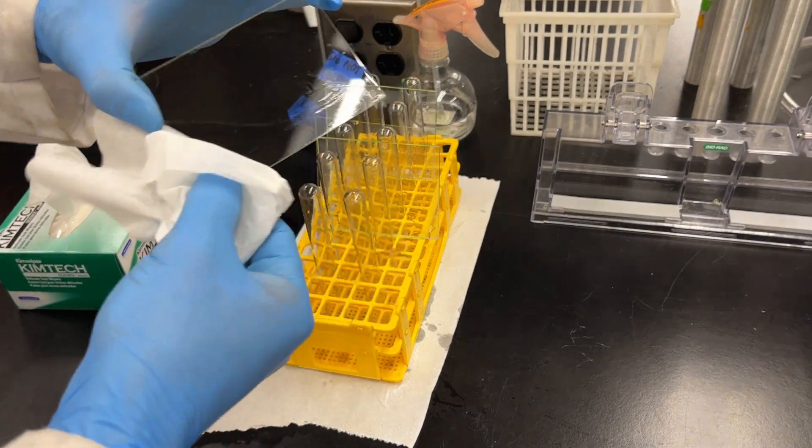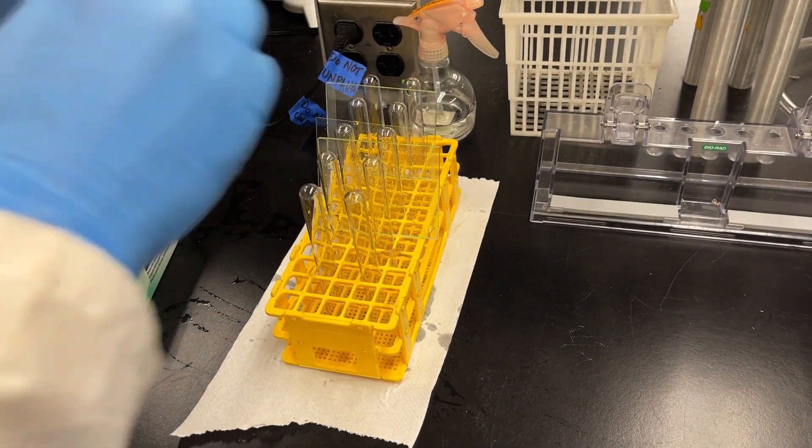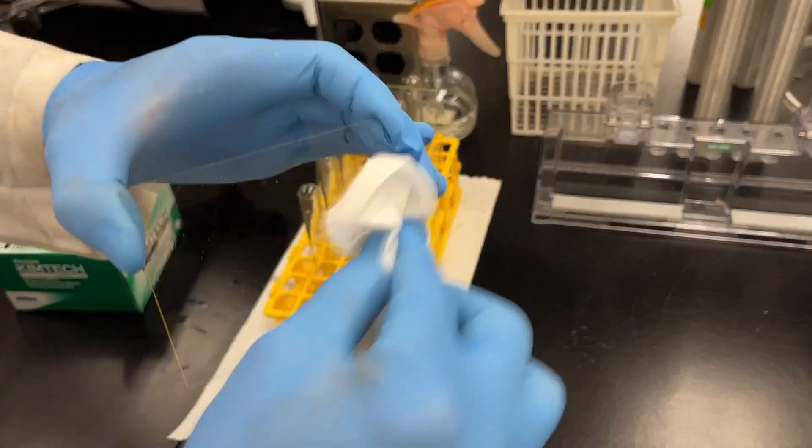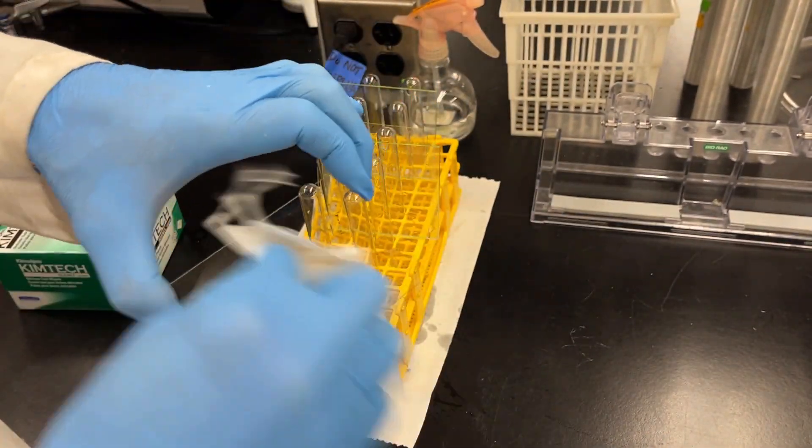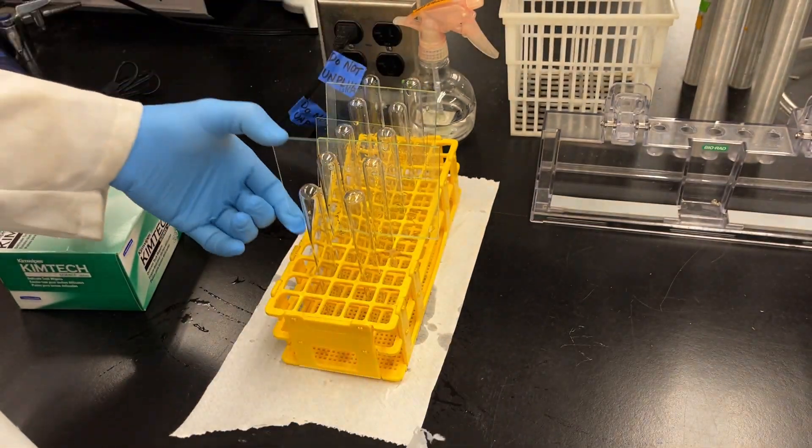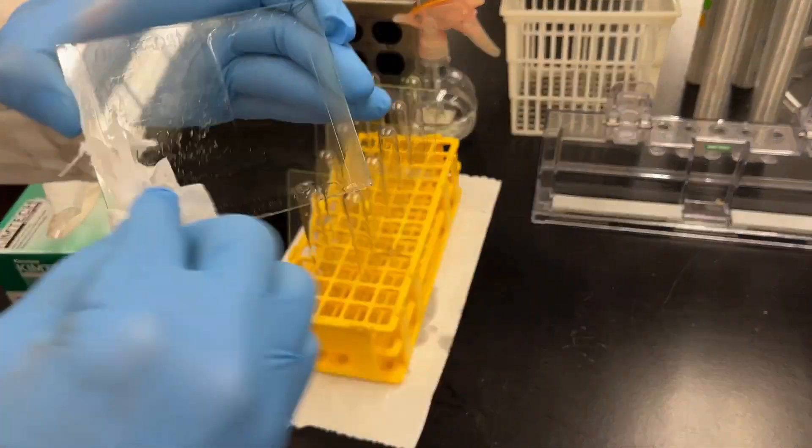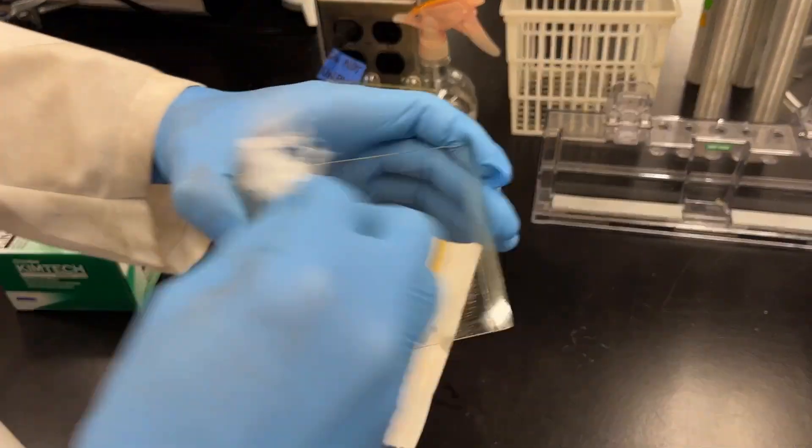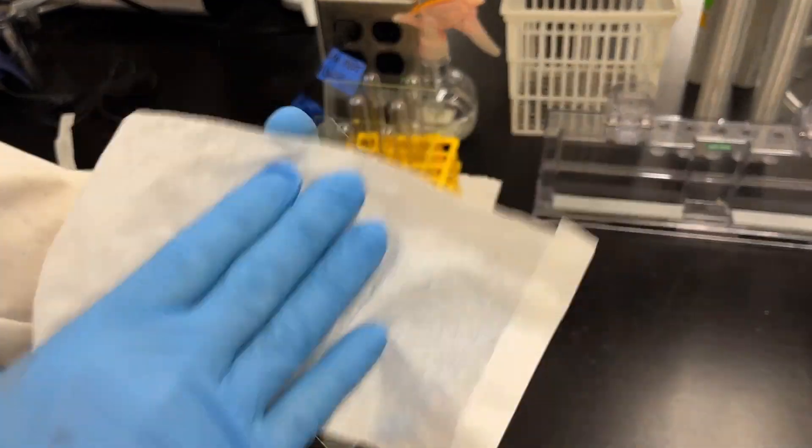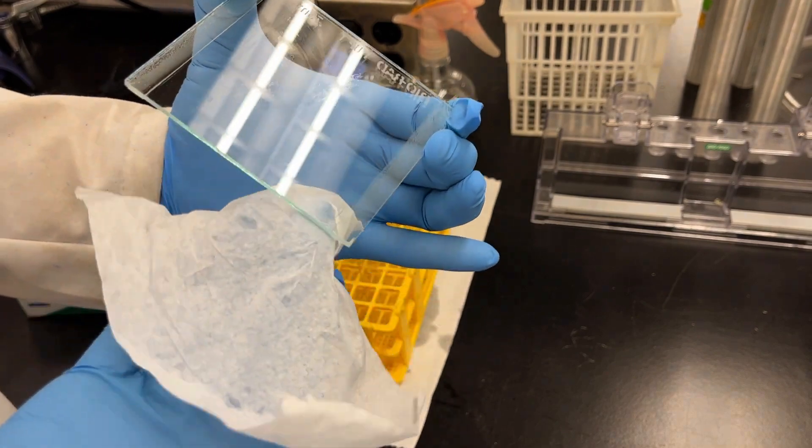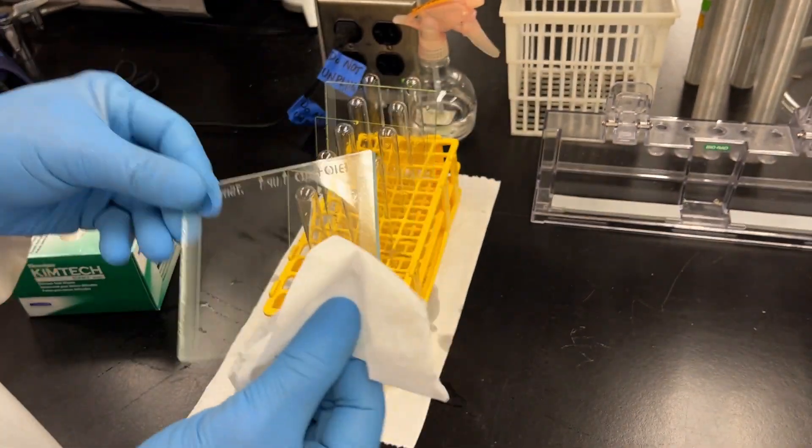Once you're done with the cleaning, dry the glass plates using Kim wipes. You want to make sure that there's no lint left behind or anything like that. Usually you'll find there are some streaks initially after the first dry, but then you dry it again and those disappear. I'm going to pour two gels, so dry all four - two thick ones and two short ones.